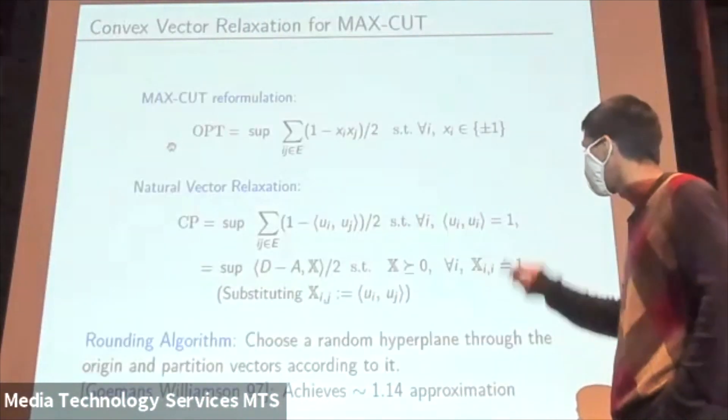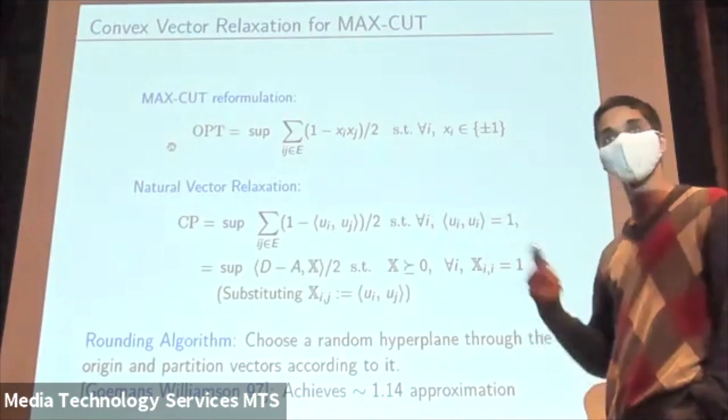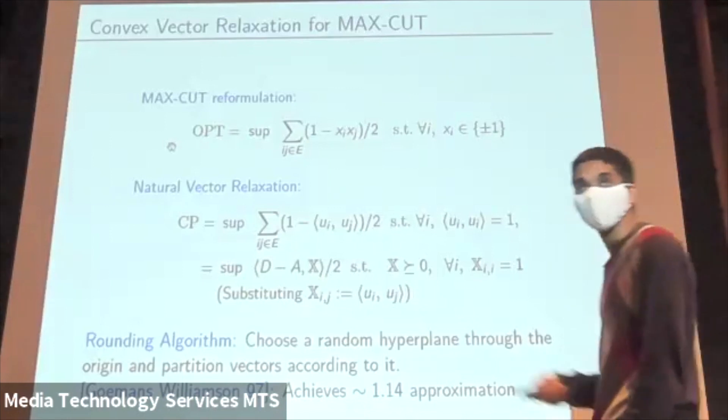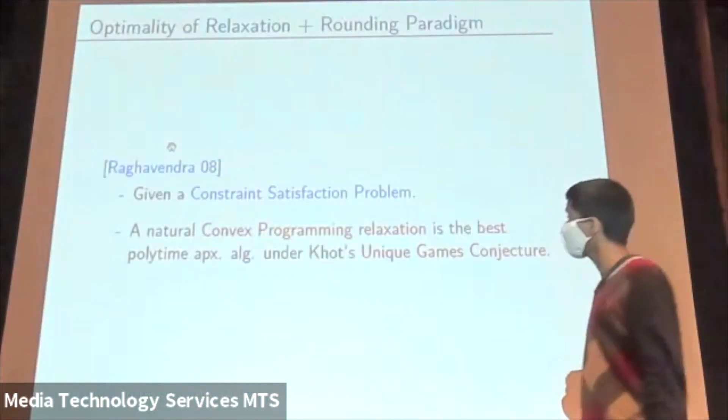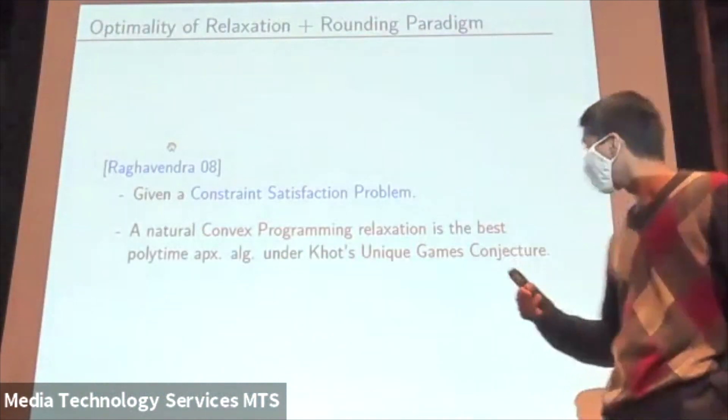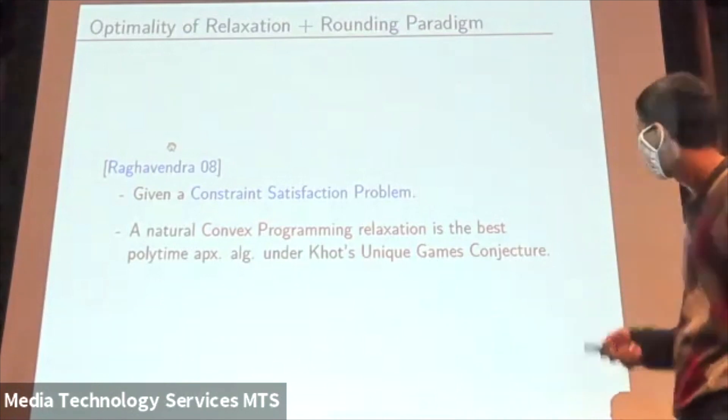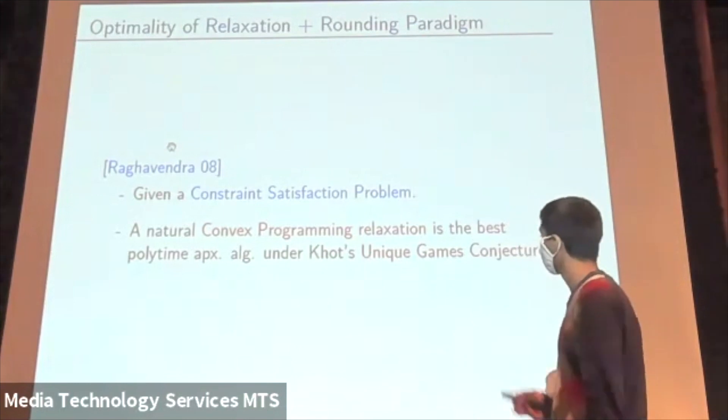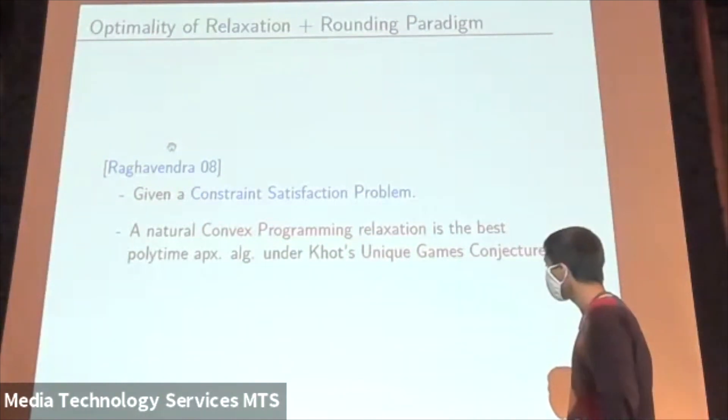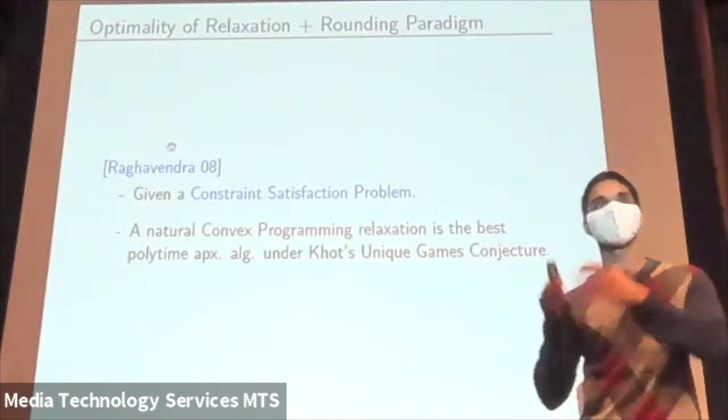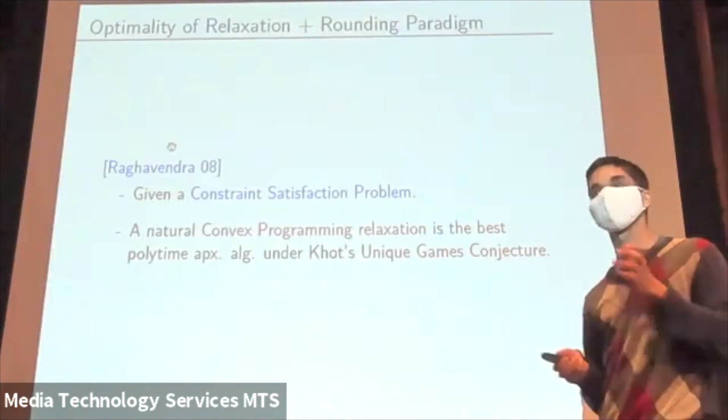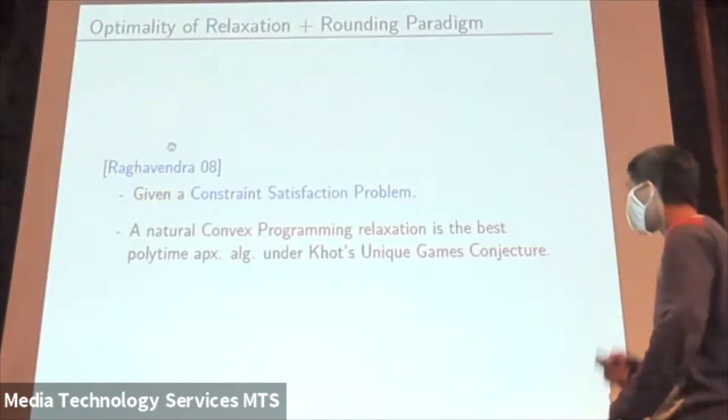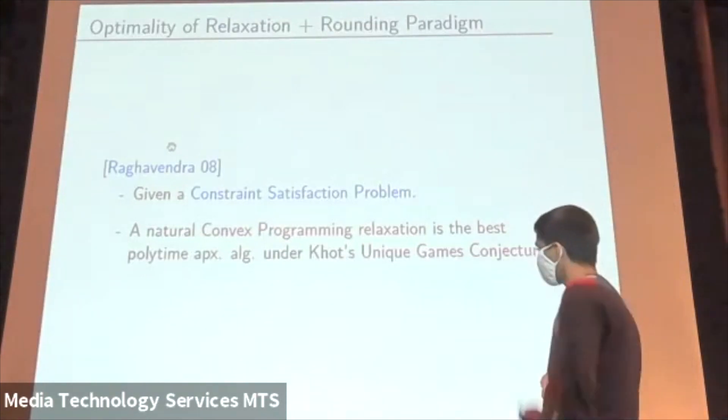It turns out, making this complexity theoretic conjecture, this is the best you can do. No other algorithm can get a better approximation. This phenomenon is much more general. Raghavendra proved this beautiful result, that for a wide class of discrete optimization problems, constraint satisfaction problems, a certain natural convex programming relaxation is the best poly-time approximation algorithm, assuming this complexity theoretic conjecture.